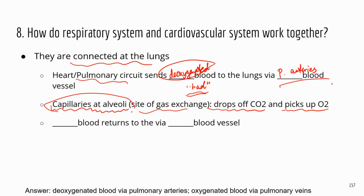Then you exhale to get rid of the carbon dioxide. After gas exchange, you now have oxygenated blood. The oxygenated blood returns to the heart, specifically the left atrium, through the pulmonary veins.